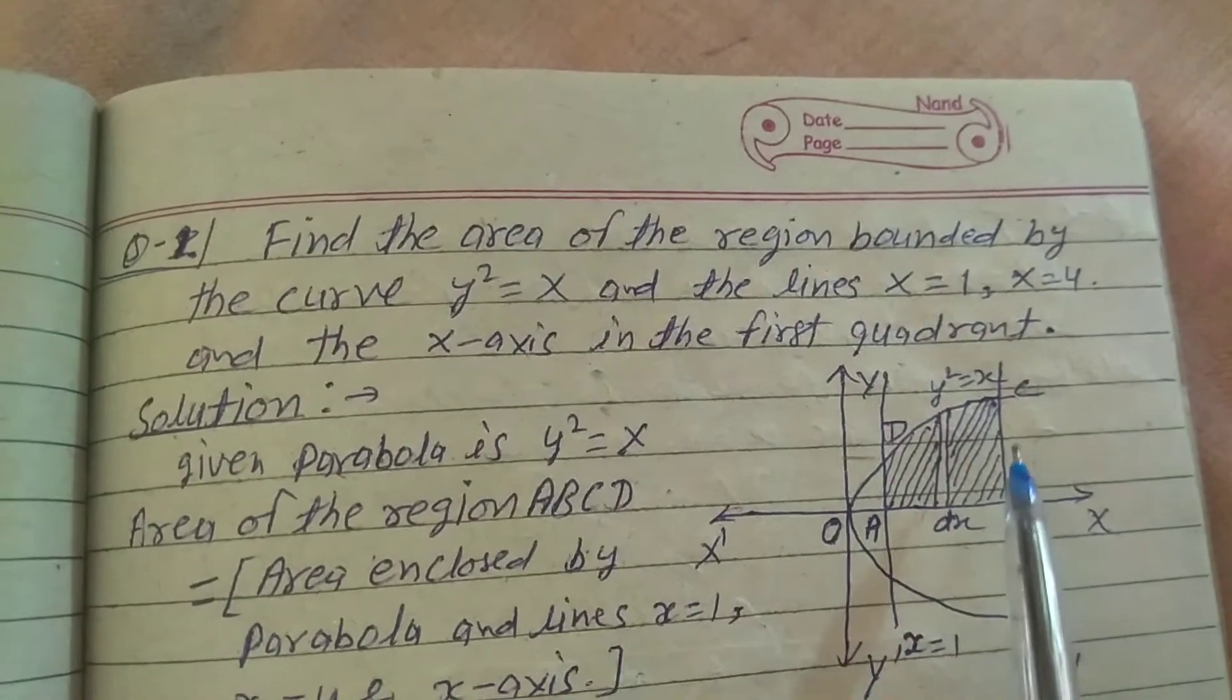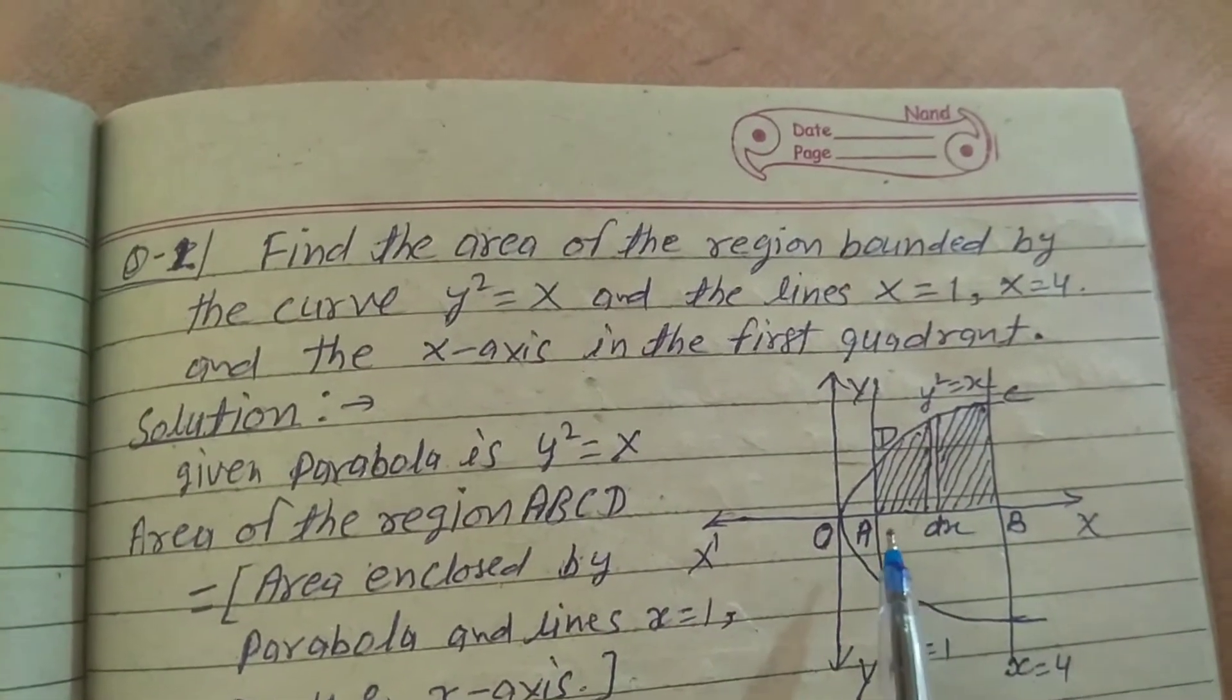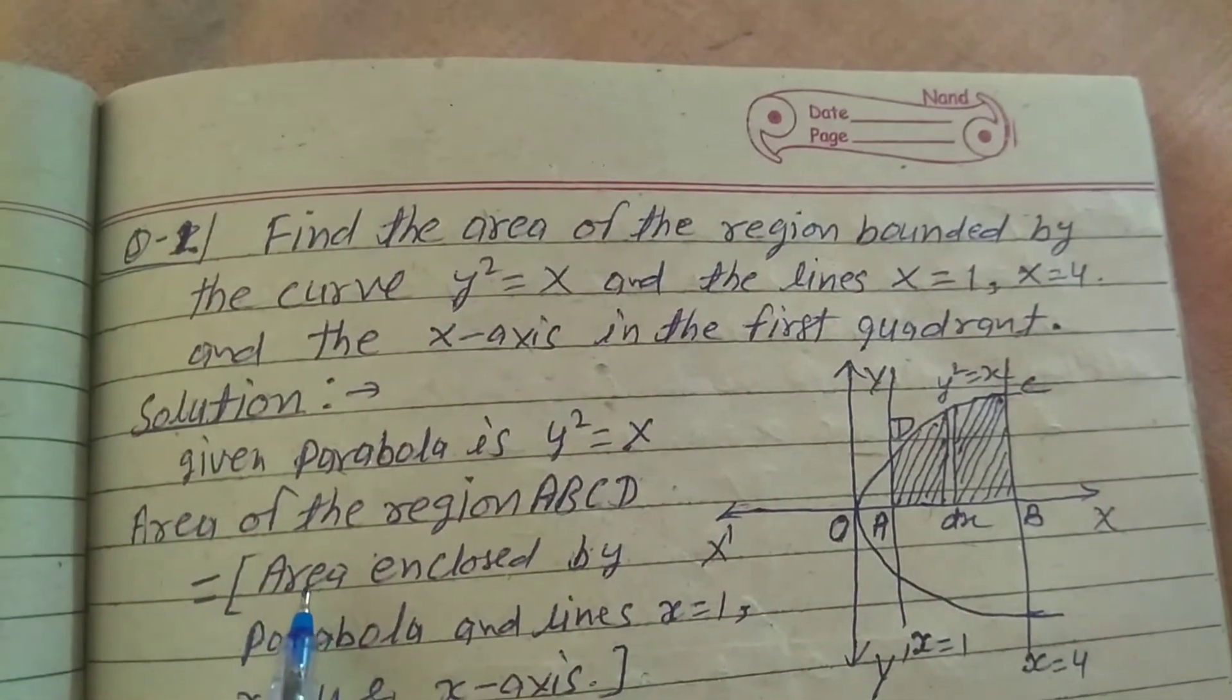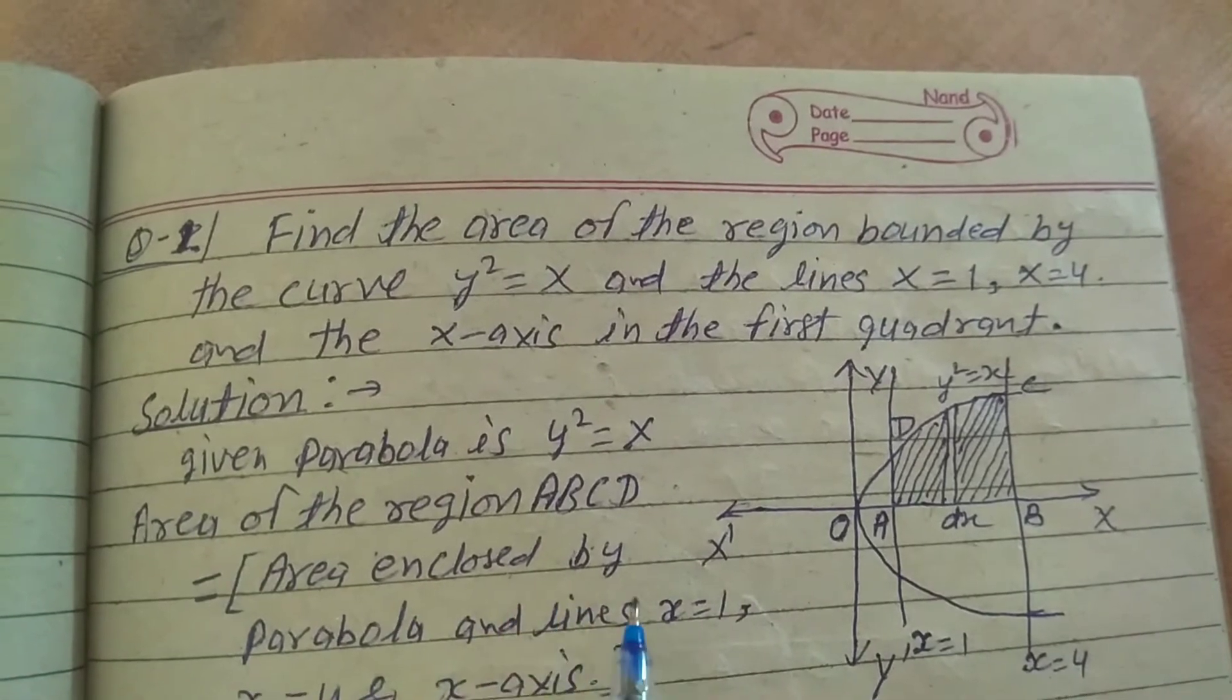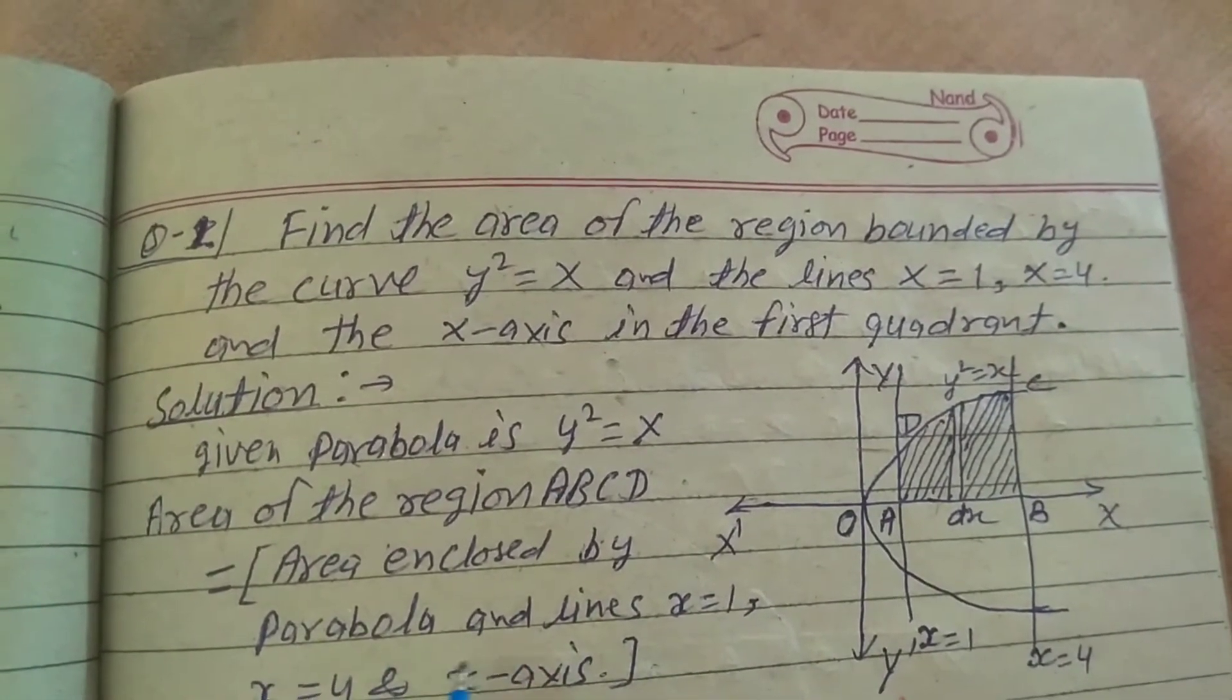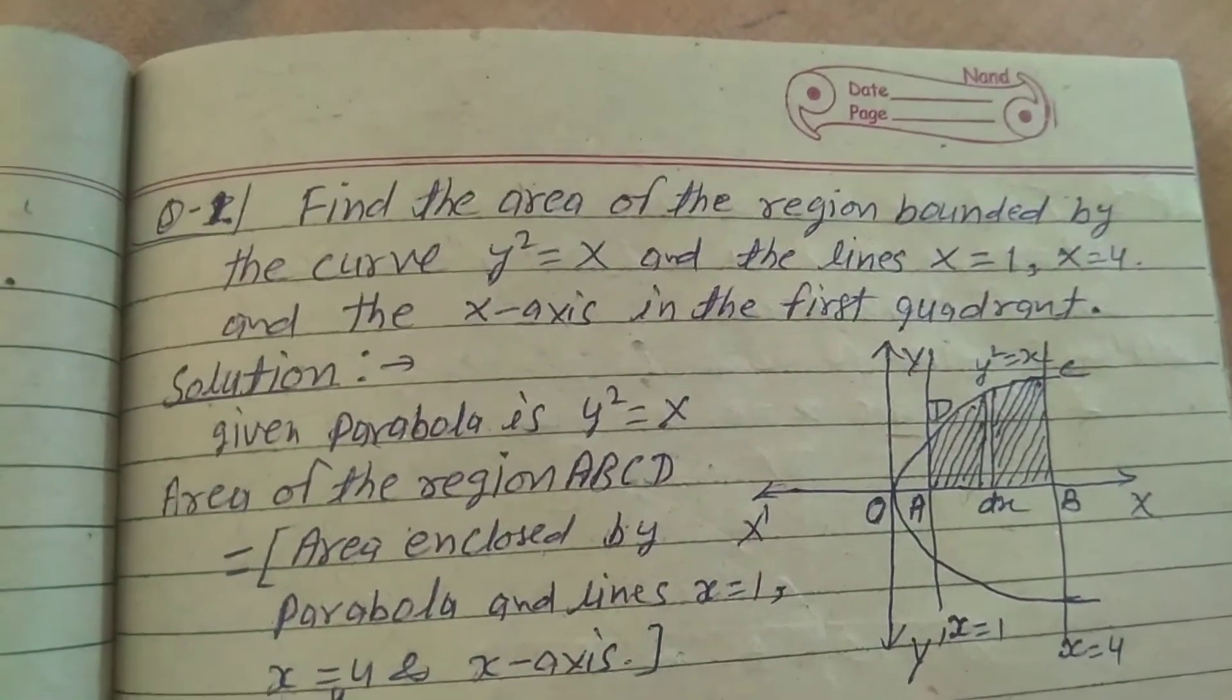X-axis, this area enclosed by this. I want to find the area of ABCD. Area of the region ABCD equals area enclosed by the parabola and the lines x = 1, x = 4, and x-axis.